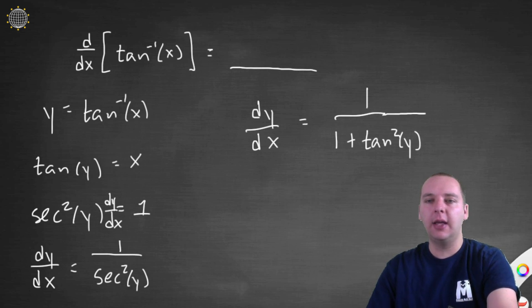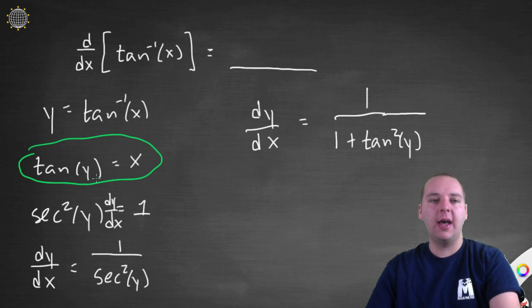And so I'm going to replace secant squared y with 1 plus tan squared y. Now, why would I do that? Well, if you look right here, I'm going to use a slick little trick right here. Tan y equals x. And so if you want to write this expression back in terms of x, I know what tan y is. Tan y is x. So what's tan squared y? It would just be x squared. So our final answer would be 1 over 1 plus x squared. And so this would be your derivative for tan inverse.